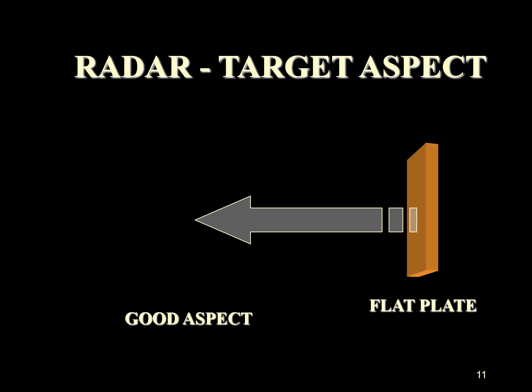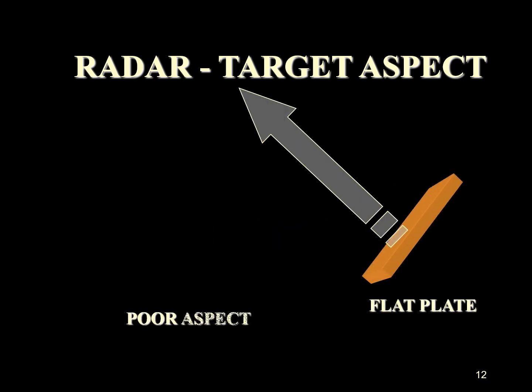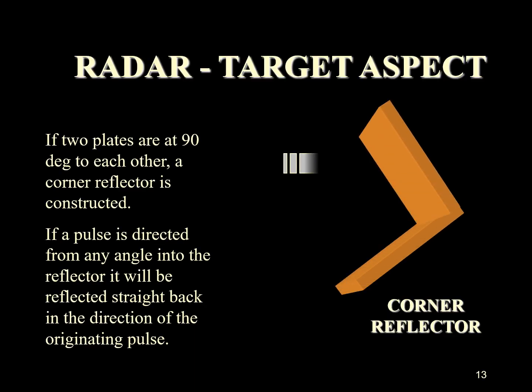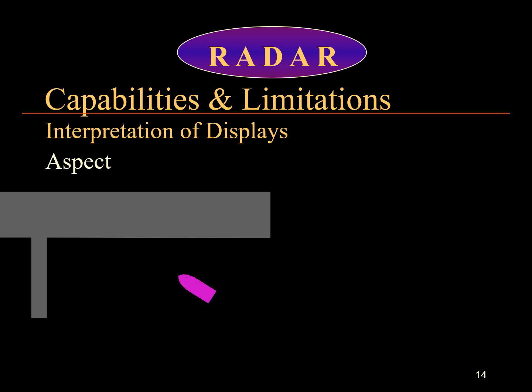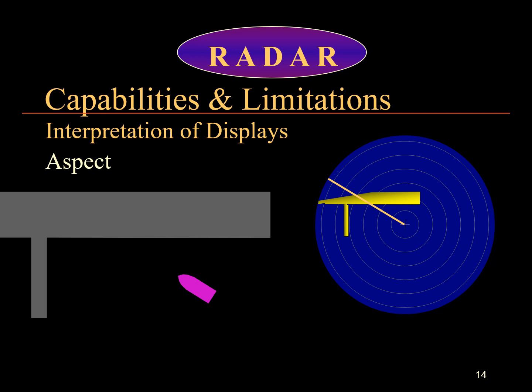If the plate is at any angle other than 90 degrees then the return will be considerably less. Here is an example: if two plates are at 90 degrees to each other, a corner reflector is constructed which, if a pulse is directed into the corner from any angle, the echo will be reflected straight back in the direction from where the pulse originated. You can see here how the aspect of a target makes a difference to its interpretation on the radar screen.